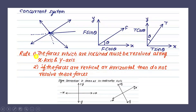The rules to be remembered while solving concurrent system of forces problems: First, forces which are inclined must be resolved along the X axis and Y axis. If the angle is with respect to the X axis, the X component is cos theta and the Y component is sin theta. If the angle is given with respect to the Y axis, the Y component is cos theta and the X component is sin theta. Second, if the forces are purely vertical or horizontal, do not resolve these forces — only inclined forces need to be resolved into X and Y components.